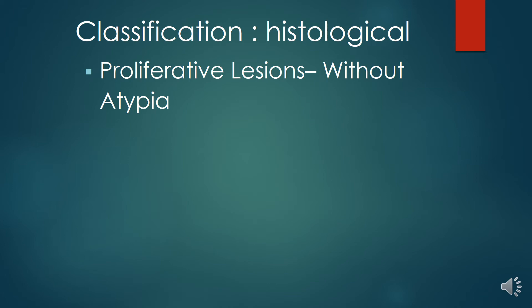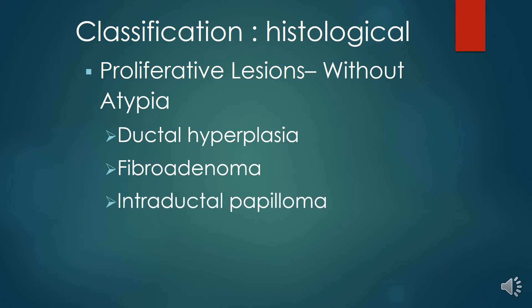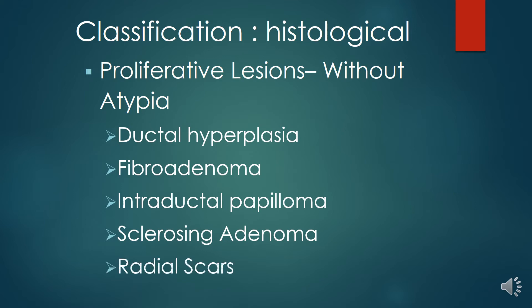Proliferative lesions can occur with or without atypia. Examples without atypia include ductal hyperplasia, fibroadenoma, and intraductal papilloma, along with sclerosing adenosis. There are various other adenomas that can occur as well, and radial scars can also be associated with breast diseases.